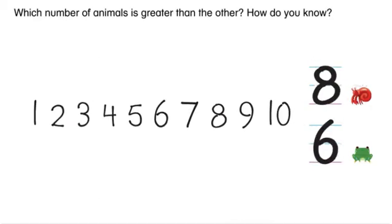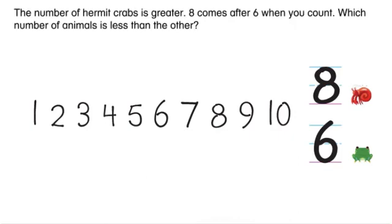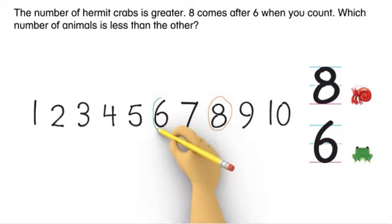Which number of animals is greater than the other? How do you know? The number of hermit crabs is greater. Eight comes after six when you count.